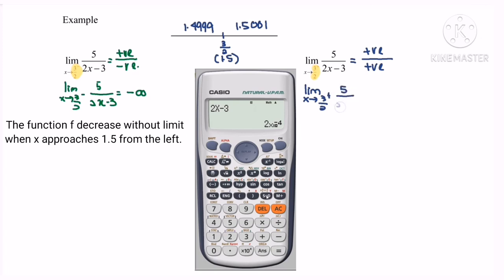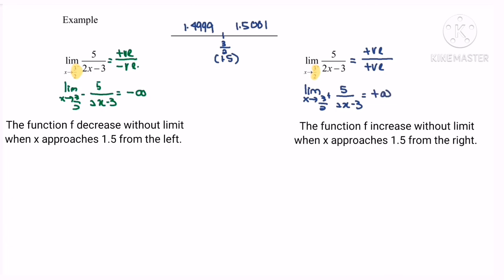So the limit when x approaches 3/2 from the right for the function 5 over (2x minus 3) is positive infinity. Referring to the calculator, if we calculate the value 1.5001, we can see a very large value of approximately 25,000. We can conclude that the function f increases without limit when x approaches 3/2 from the right. Thanks for watching.